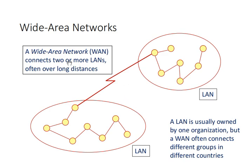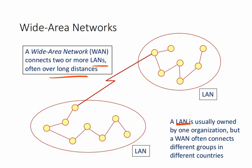A Wide Area Network (WAN) connects two or more LANs over long distances. For example, connecting the LAN within UNZA to other universities forms a WAN. A LAN is usually owned by one organization, which is why IDROM qualifies as a LAN within UNZA. A WAN, on the other hand, often connects different groups in different countries.